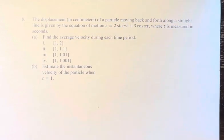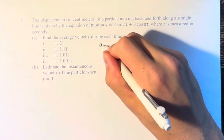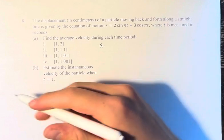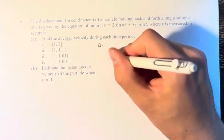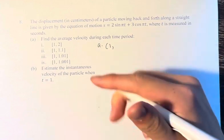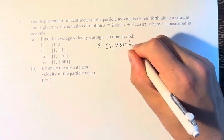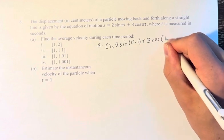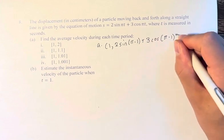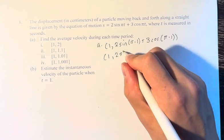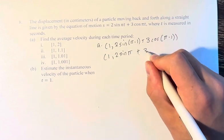We're asked to find the average velocity during each time period. In order to do this, we need to find the points associated with these values. For example, at t = 1, the point is (1, 2sin(π·1) + 3cos(π·1)), which is 1 times 2sin(π) + 3cos(π).